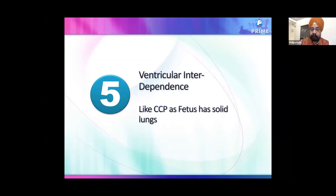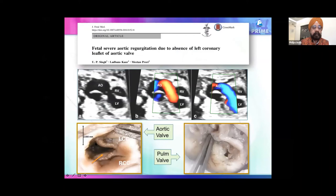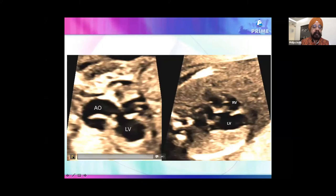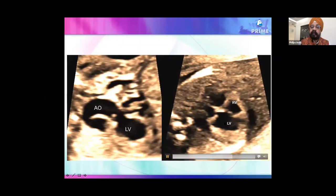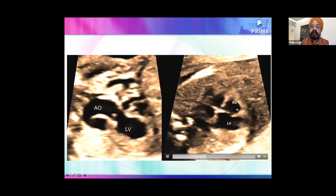We published a rare case of absent non-coronary cusp of the aortic valve with a normal pulmonary valve, resulting in torrential aortic regurgitation — blood going to and fro in the LV. The LV was severely dilated but the RV was also affected despite no primary RV pathology, simply because of ventricular interdependence in the closed, solid-lung cage.